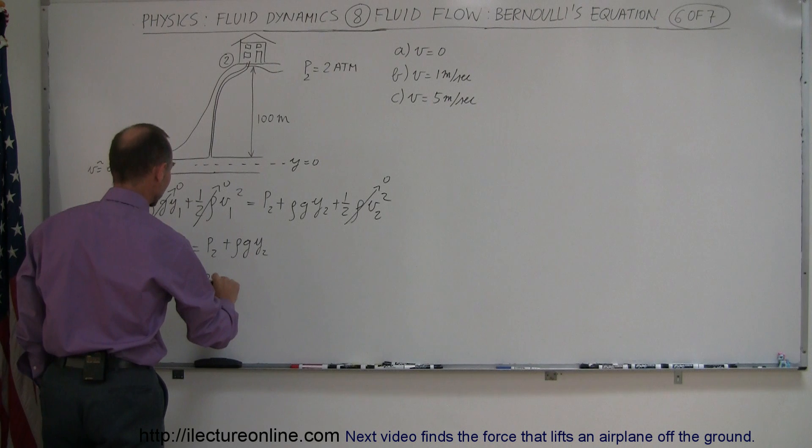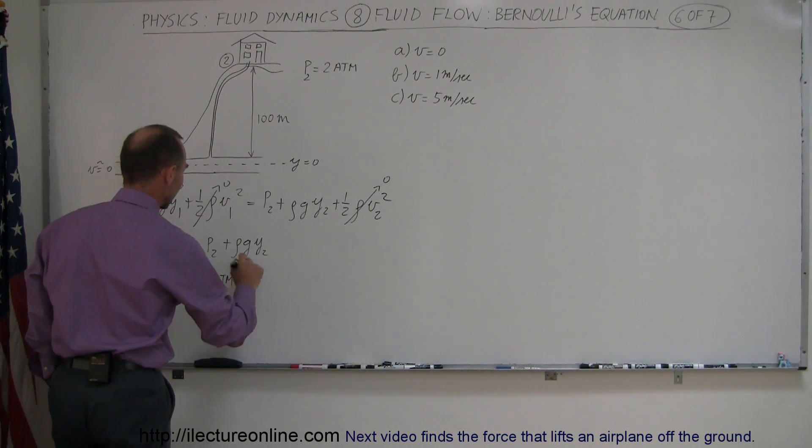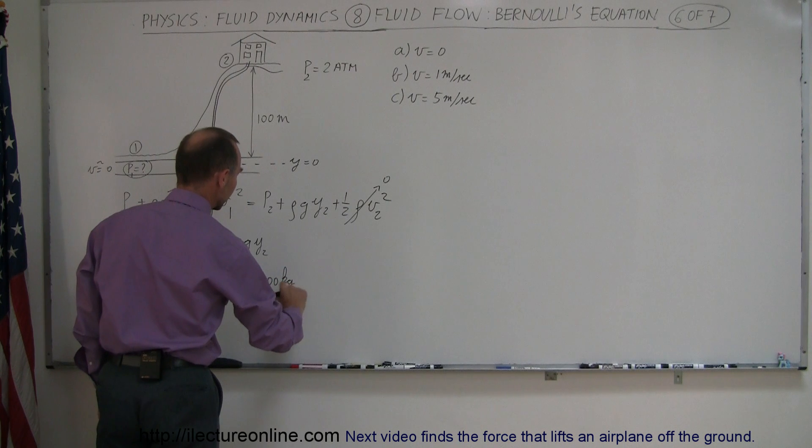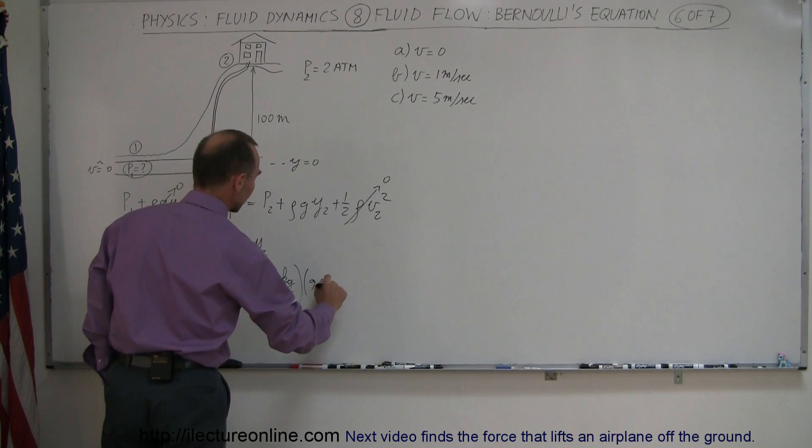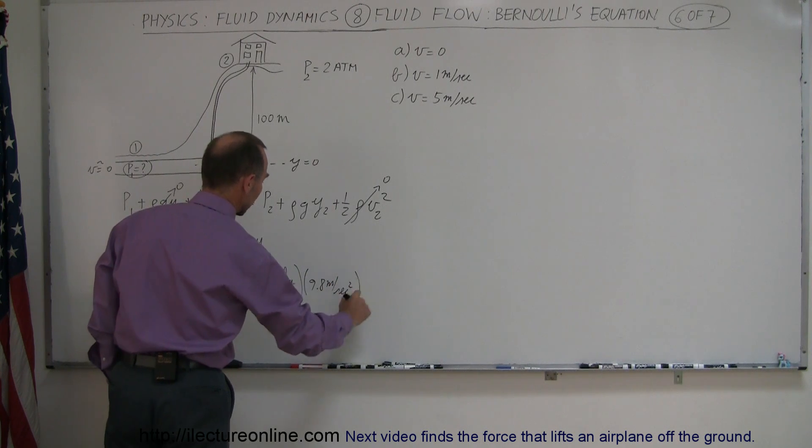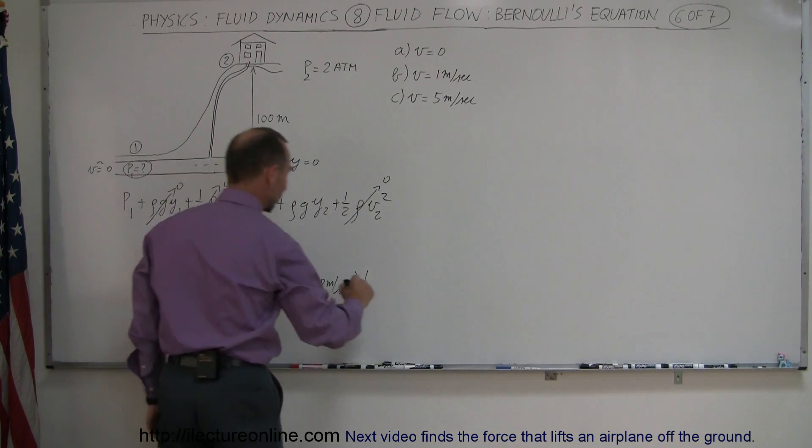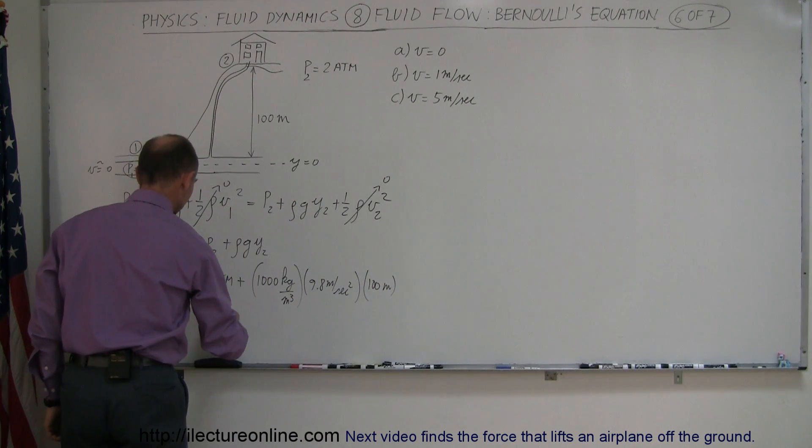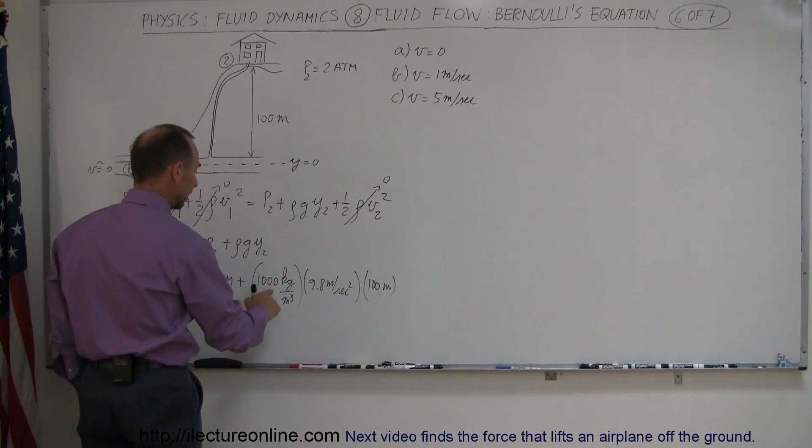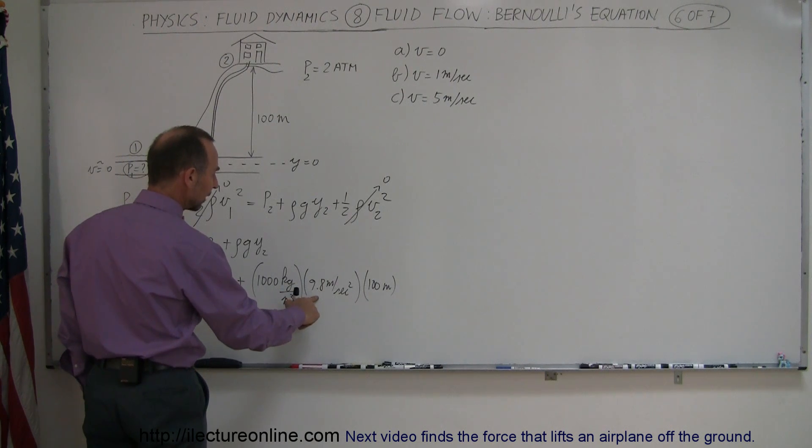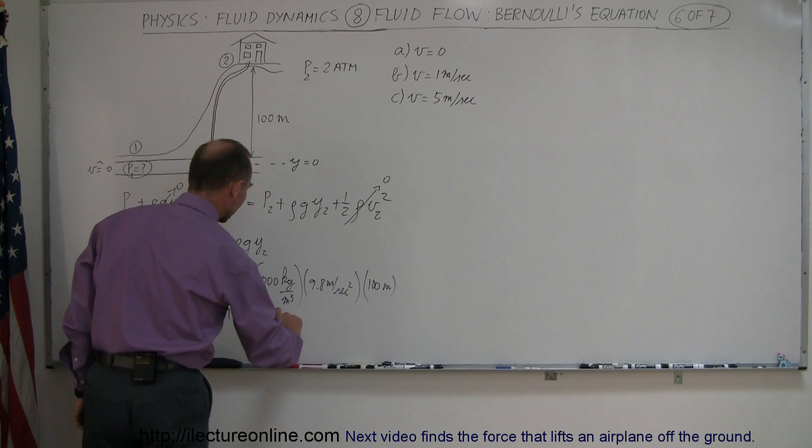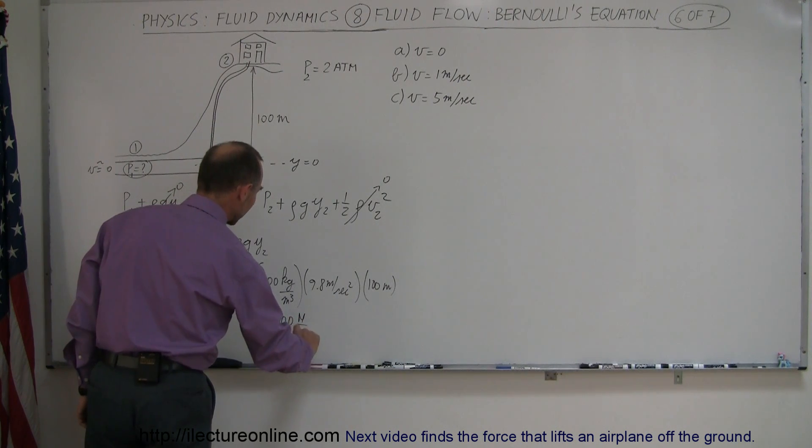So this is equal to two atmospheres, plus the density of water which is 1000 kilograms per cubic meter. G, 9.8 meters per second squared. And then Y is the height that would be 100 meters. And so this is equal to two atmospheres, plus that would be 9800 times 100, that would be 980,000 newtons per square meter.